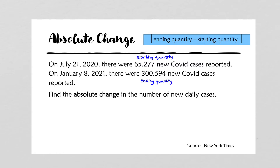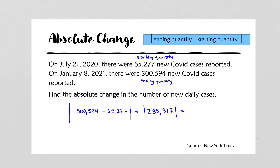To calculate the absolute change in these two quantities, we take the absolute value of the ending quantity, which is 300,594, and subtract from it the starting quantity, 65,277. That gives us the absolute value of 235,317. Since the absolute value makes any number positive, and our number is already positive, our final answer is simply 235,317 cases. This is the absolute change in the number of new daily cases.